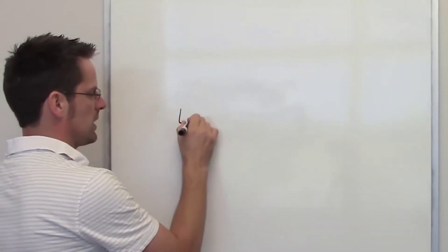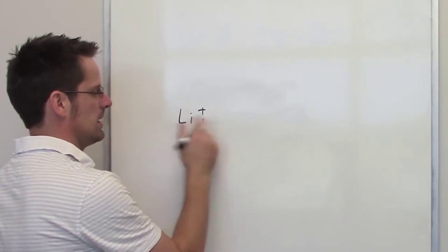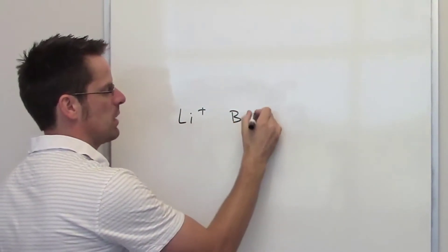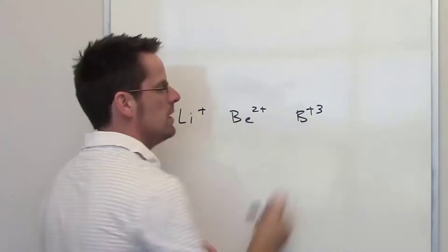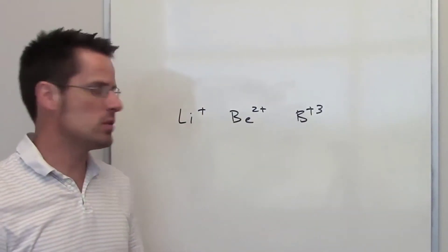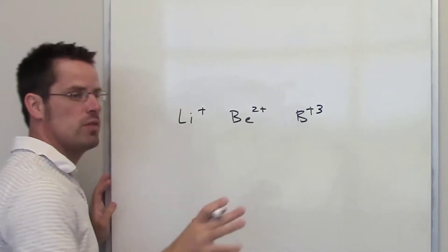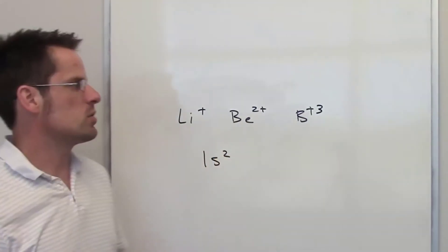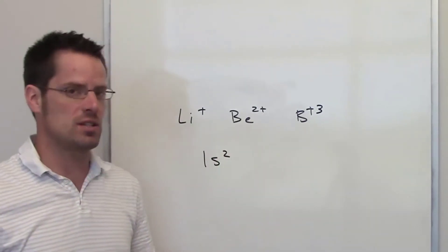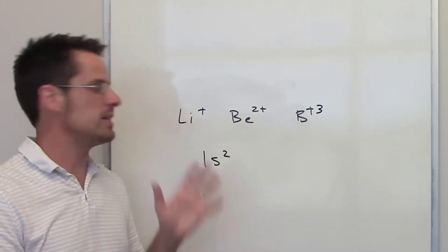In this next question, we're given lithium cation and asked to compare it with beryllium cation and boron cation. Looking at the periodic table, you'll see that all of these elements have the same electron configuration as that of helium, which is 1s2. So as far as the number of electrons in orbitals is concerned, we can't make a distinction in size.